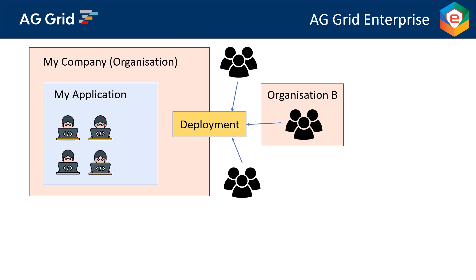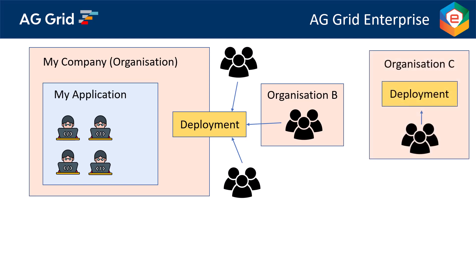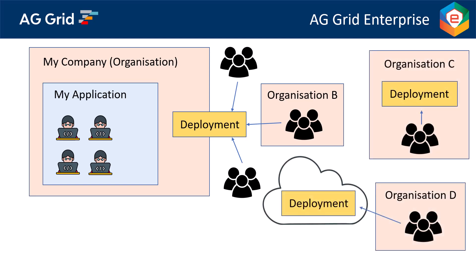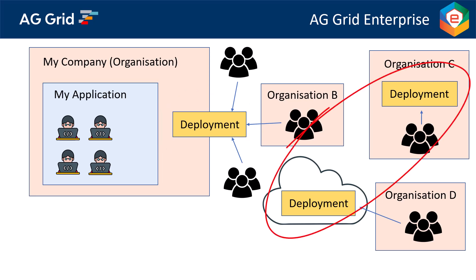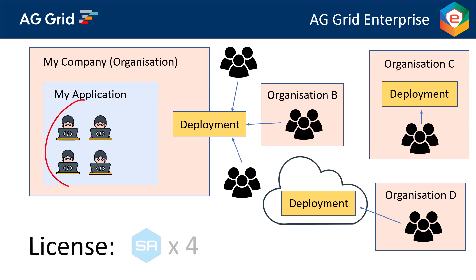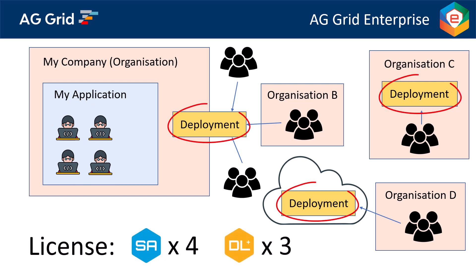If the software has multiple production instances — such as installed on-premises for a customer or in the cloud for a customer — then each production instance requires a deployment license. In this example, we have multiple customers accessing one shared SaaS instance and then two customers accessing private instances. That is three deployment licenses in total, so we will need four single application licenses and three deployment licenses.